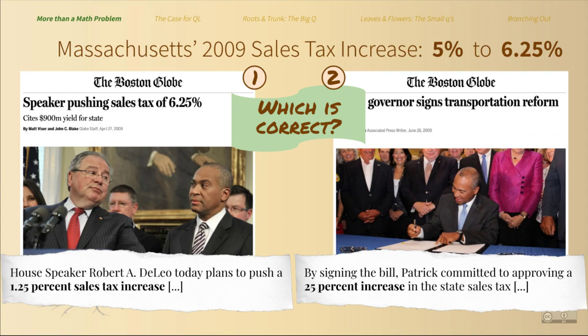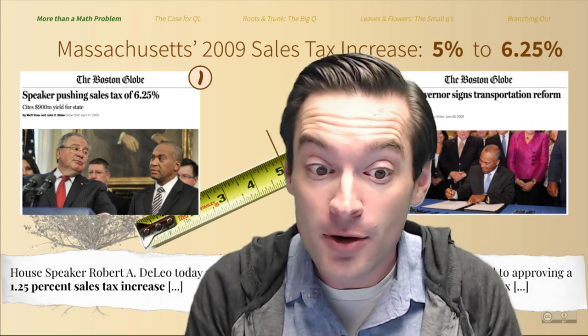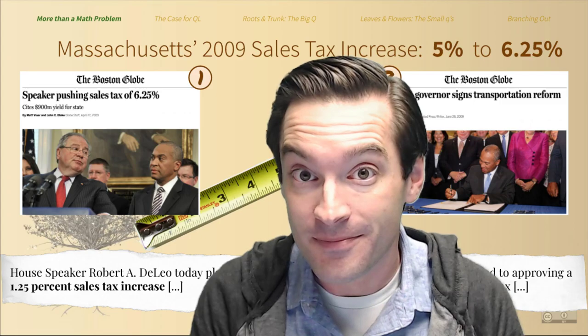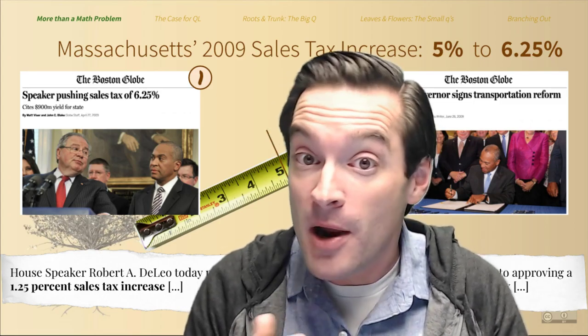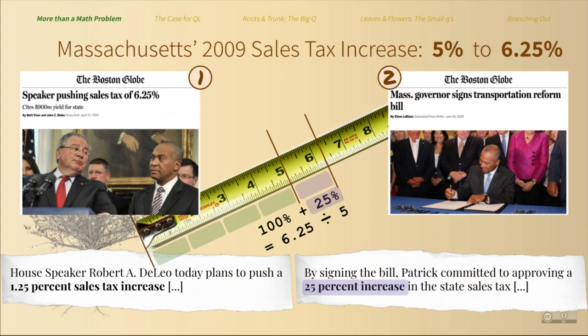So which one of them is correct? The April article is correct in that its author compared the new tax rate to the old tax rate by subtracting, measuring what we call an absolute difference. The tax rate was indeed set to be increased by adding an amount of 1.25 percentage points. The June article is also correct because the author is comparing the new tax rate to the old tax rate by dividing, measuring what we call a relative difference, reported as a percent. The amount of the proposed rate increase is exactly one quarter, or 25%, of the previous existing rate.